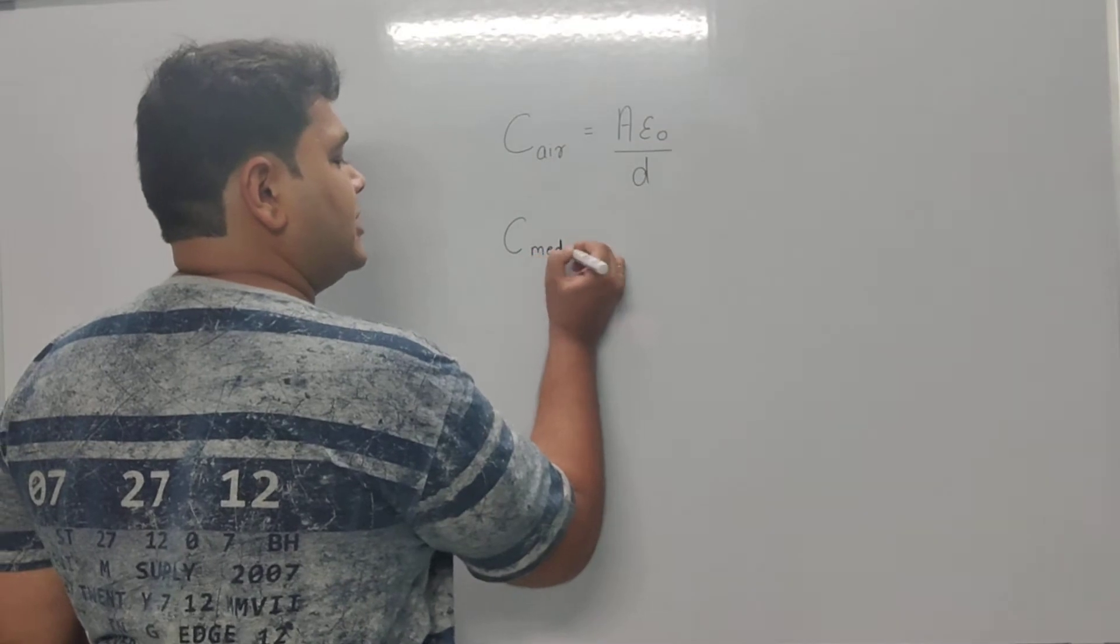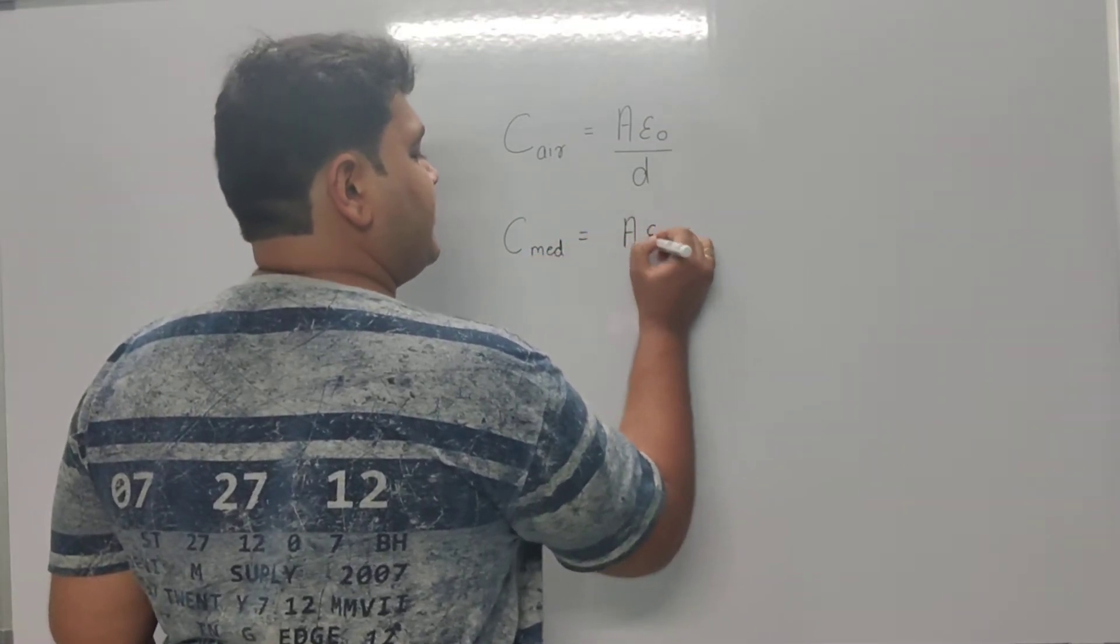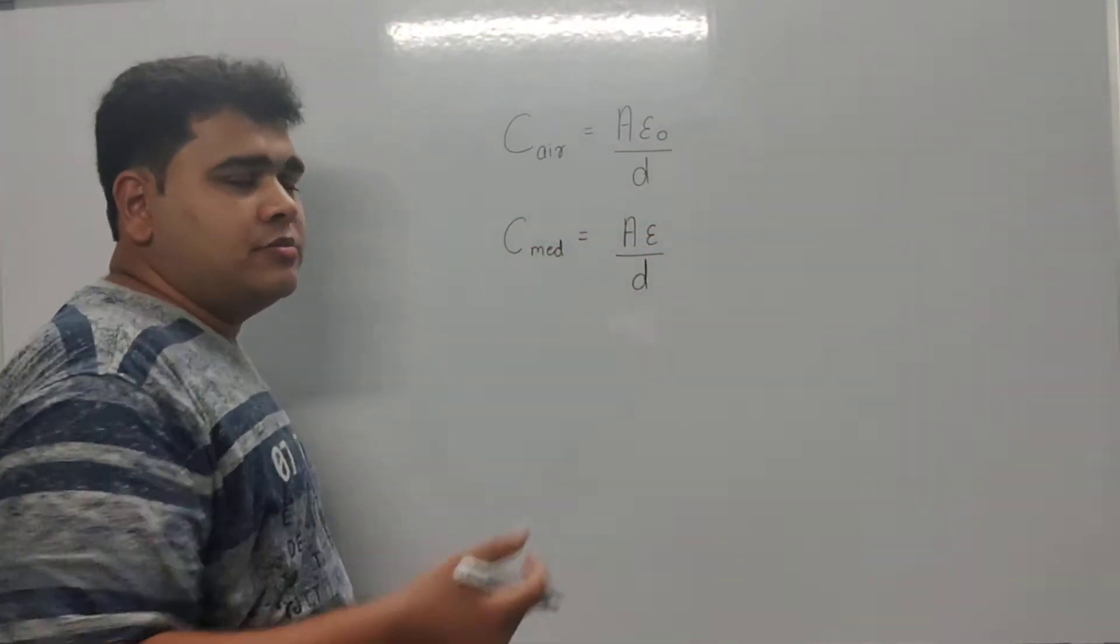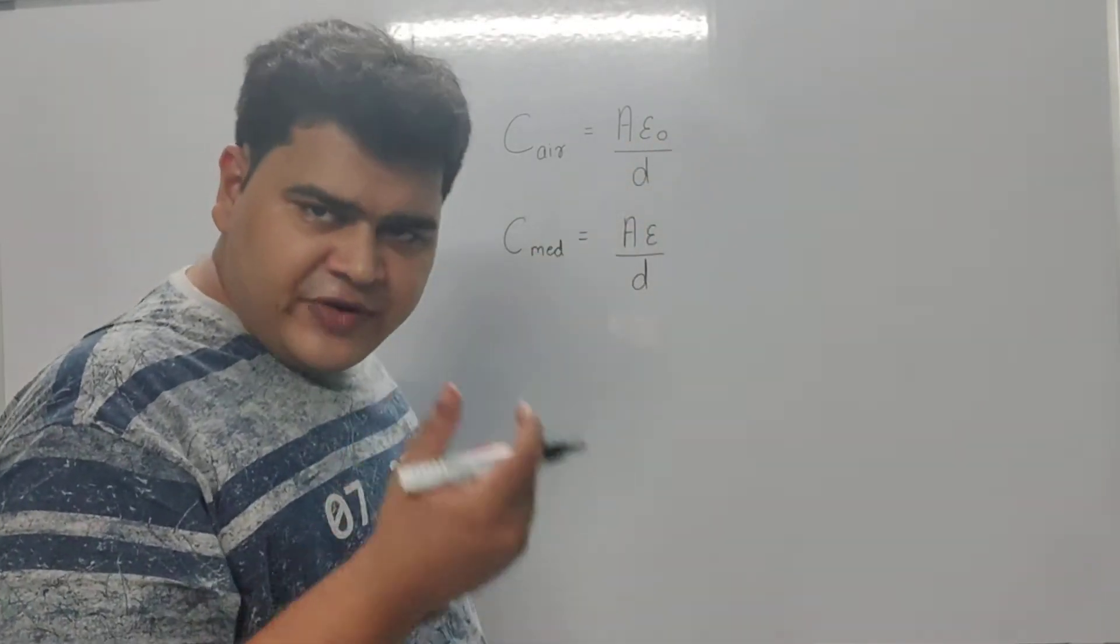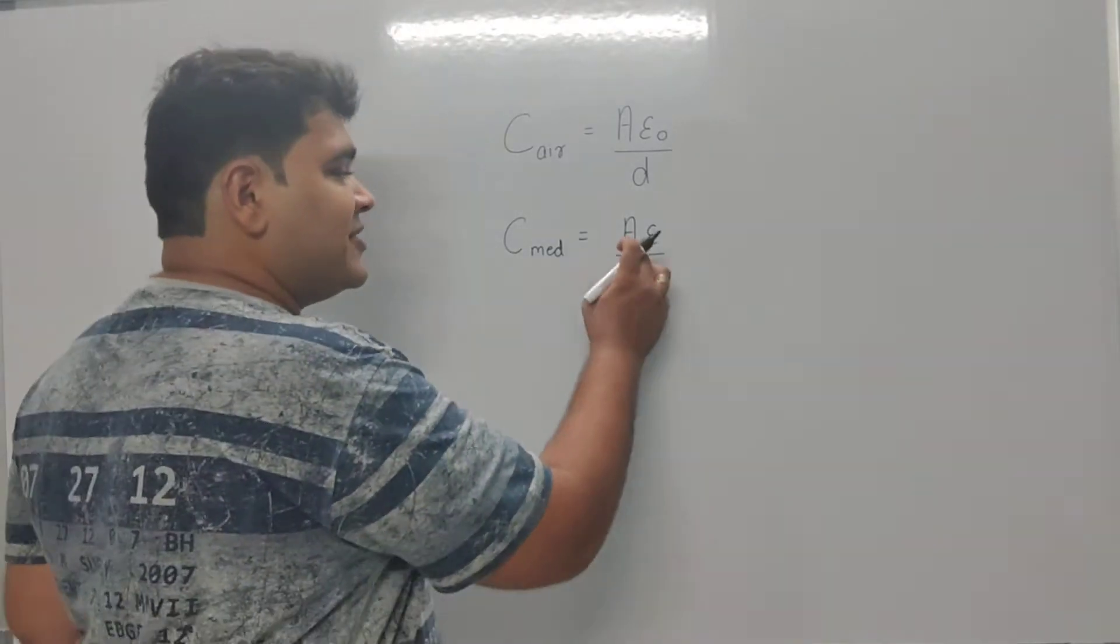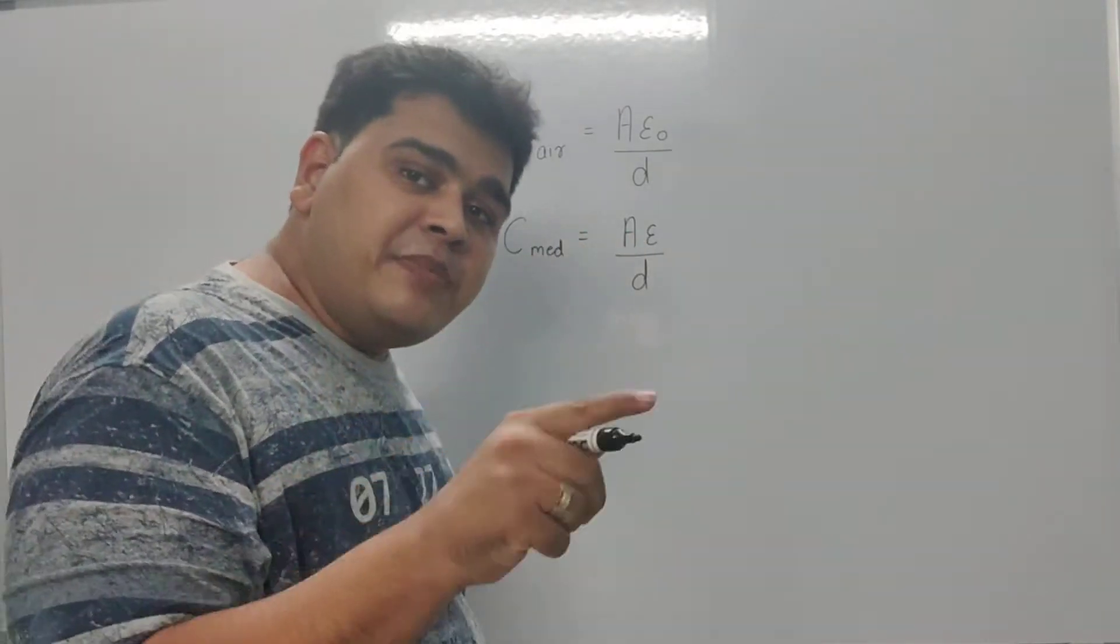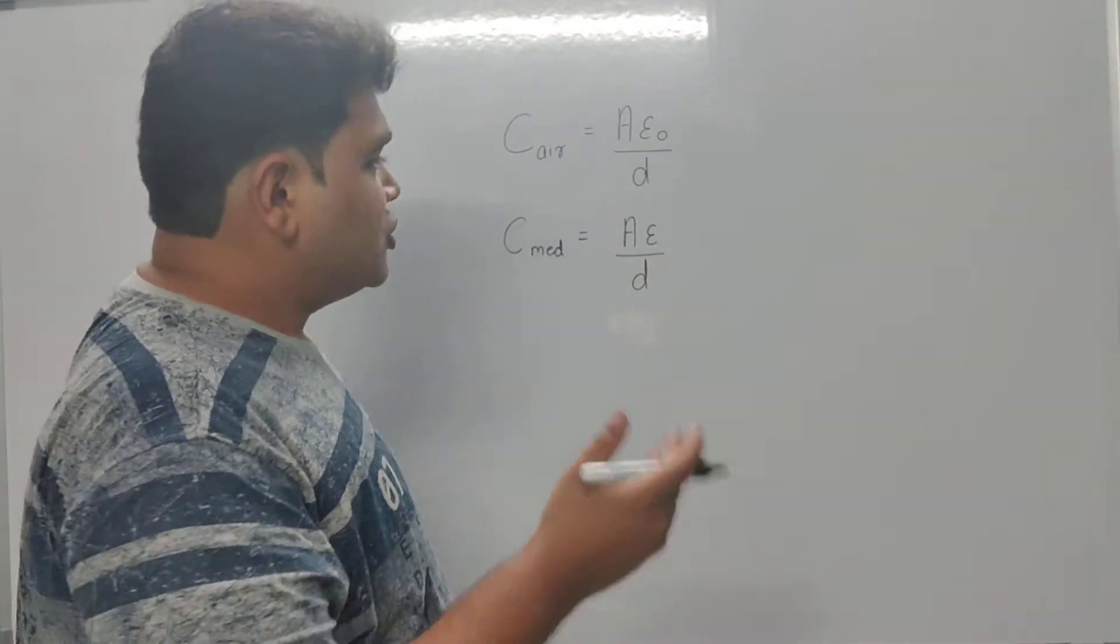The capacitance in a given medium can be written as C = A epsilon naught epsilon / d. Now, epsilon naught is the permittivity of free space or vacuum, and epsilon is the permittivity of the medium which is introduced.